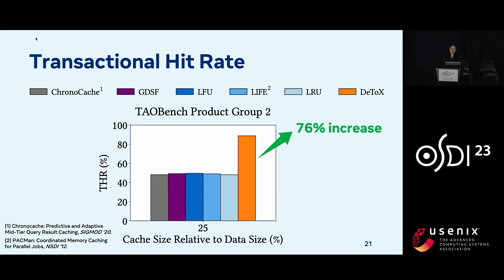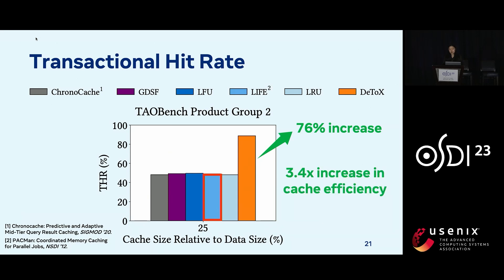We note that the two more transaction-aware baselines, ChronoCache and LIFE, don't do that well. ChronoCache is only leveraging transactional information for prefetching, but its default eviction algorithm is LRU, and since the TauBench workloads are mostly flat, it isn't able to do any prefetching, so its results match LRU. LIFE does use levels to make caching decisions, but it only uses size to rank these levels and doesn't use frequency and recency, which are the more important heuristics for this workload. For all baselines to achieve the same hit rate, they would need much more cache space — we are 3.4x more efficient in terms of cache space, representing significant cost savings.